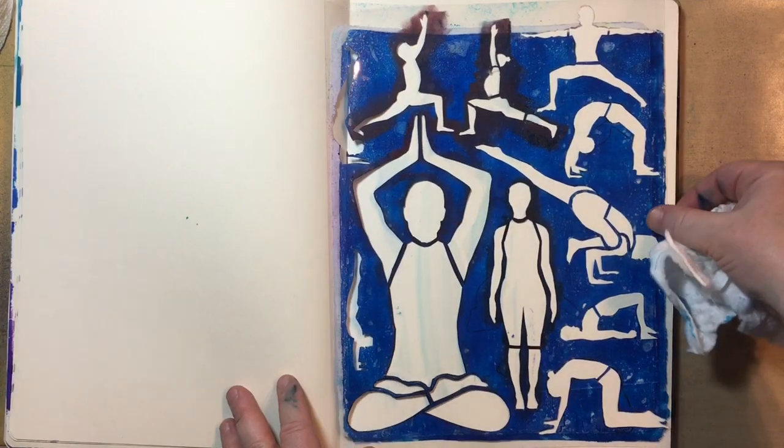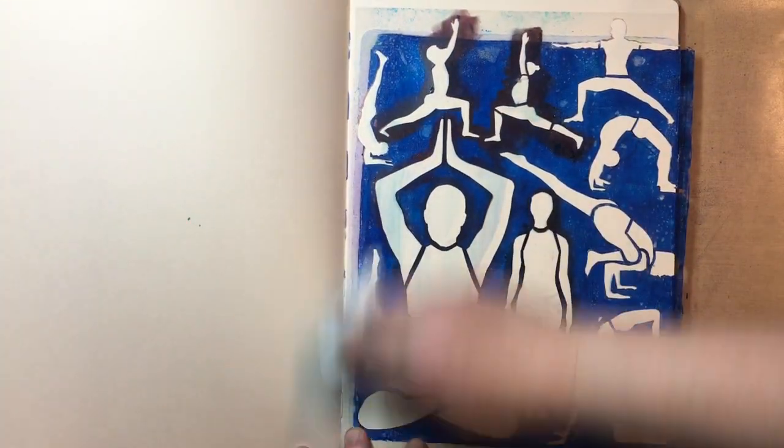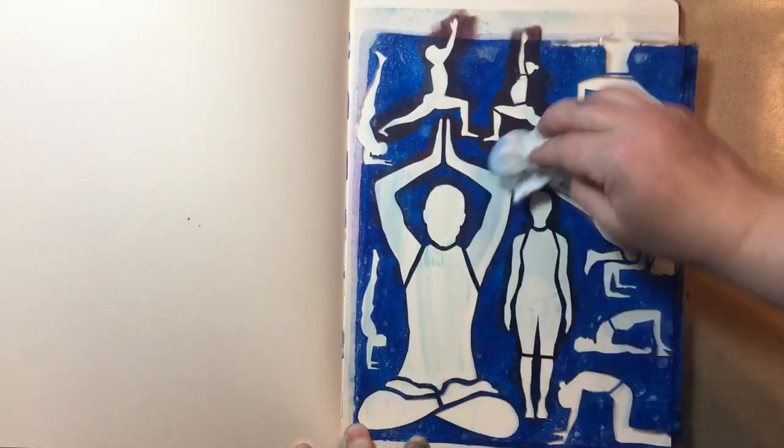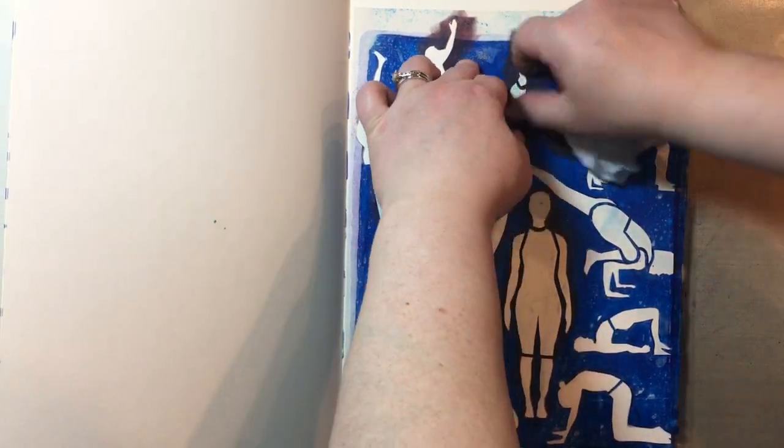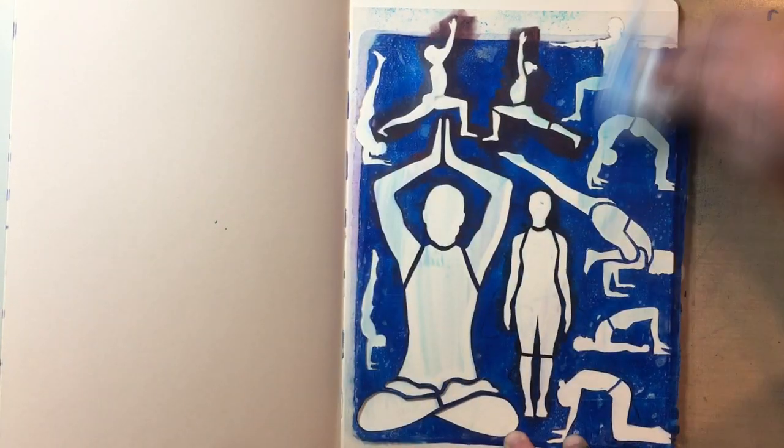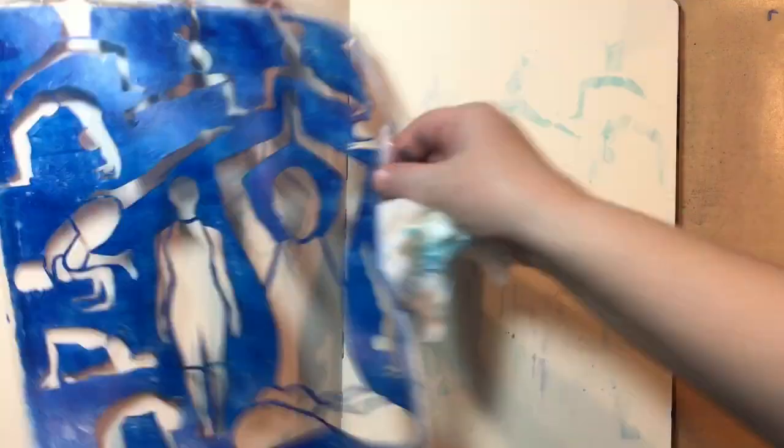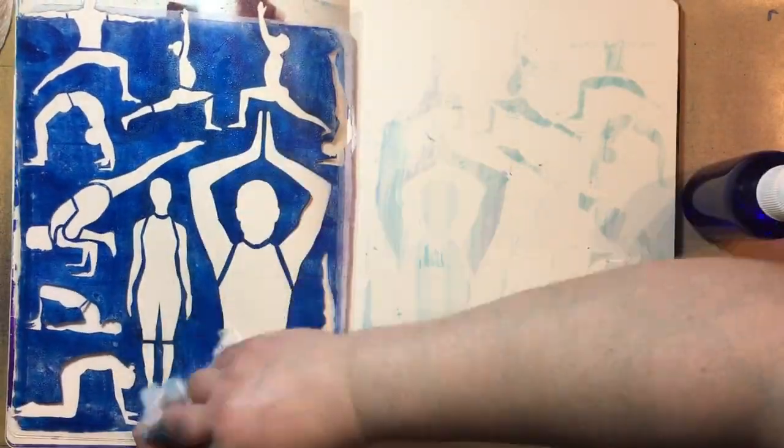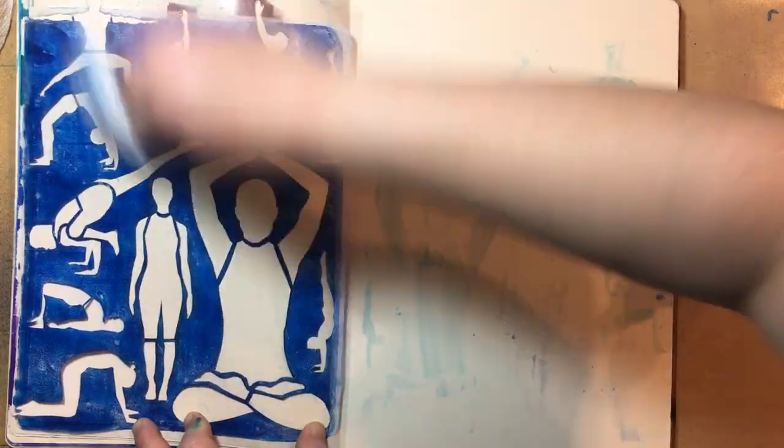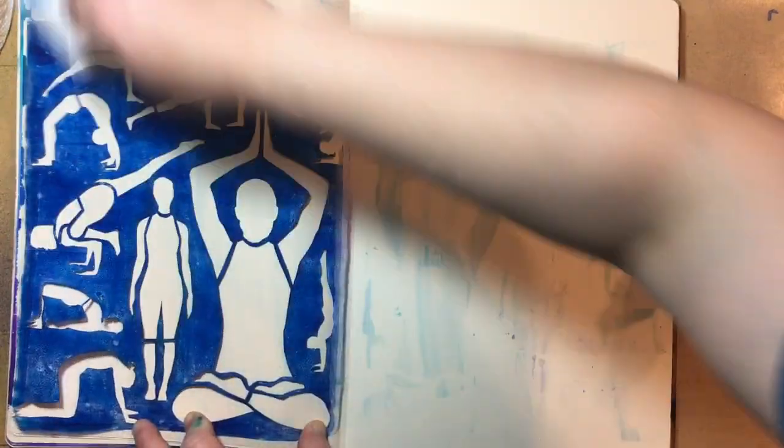Next, I take a baby wipe and I'm running it over the stencil, which kind of in a way dilutes it yet puts it in the areas where the stencil film is, not the holes of the stencil. Flipping it over, doing the same thing. This is sort of a two-fold effect: cleaning it and also creating a little bit of texture to work on at a later point in the book.